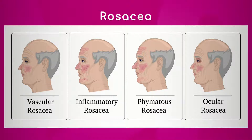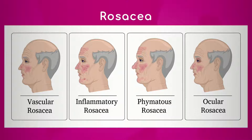Phymatous rosacea is when the skin starts to become thickened. You basically get what's called hypertrophy, or thickening of the connective tissue. You also get a thickening of the sebaceous or oil glands, and that's what can cause that skin to look very bumpy in appearance. You can see in the picture that the gentleman has even an enlarged nose — that's what we call rhinophyma.